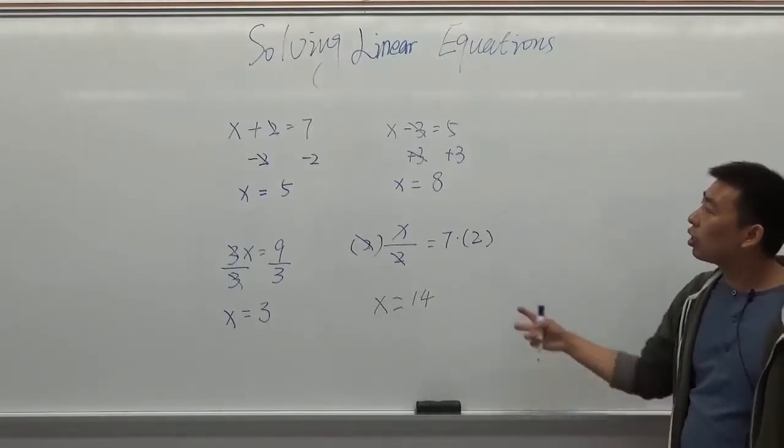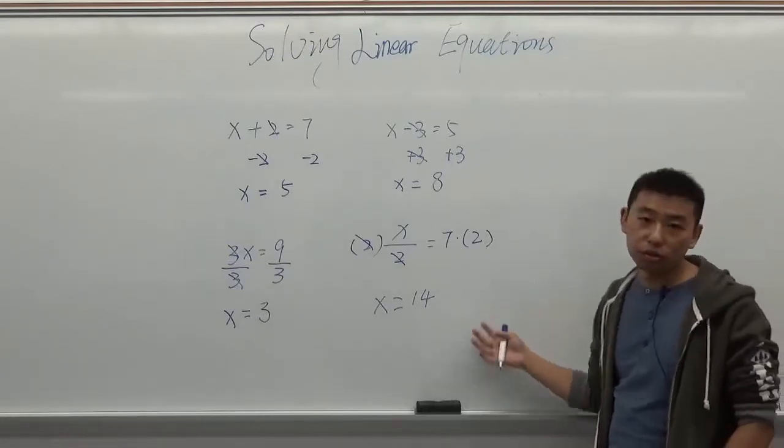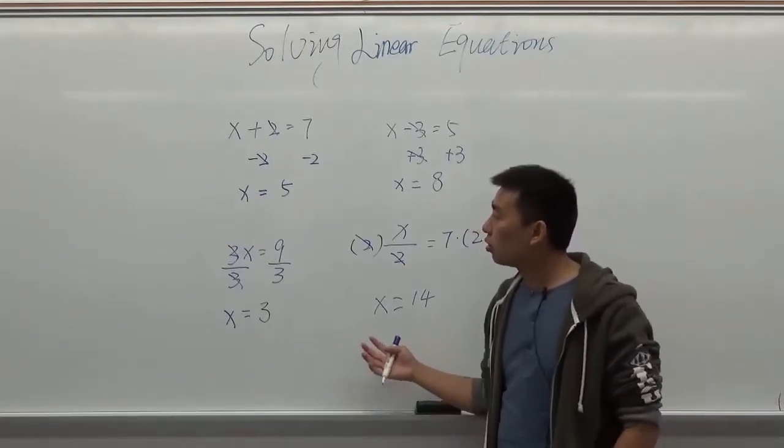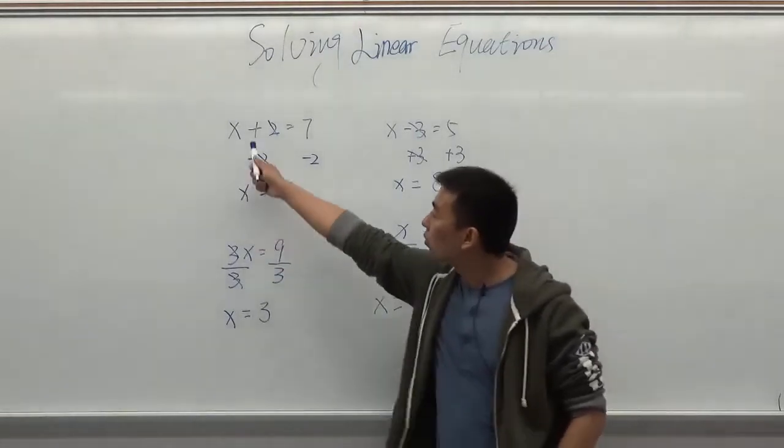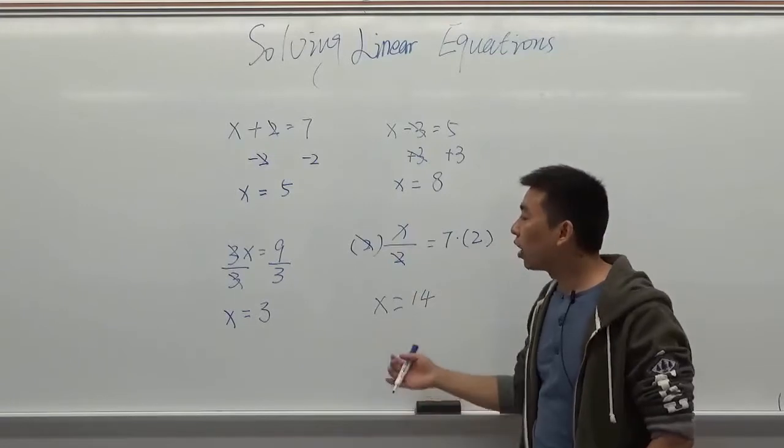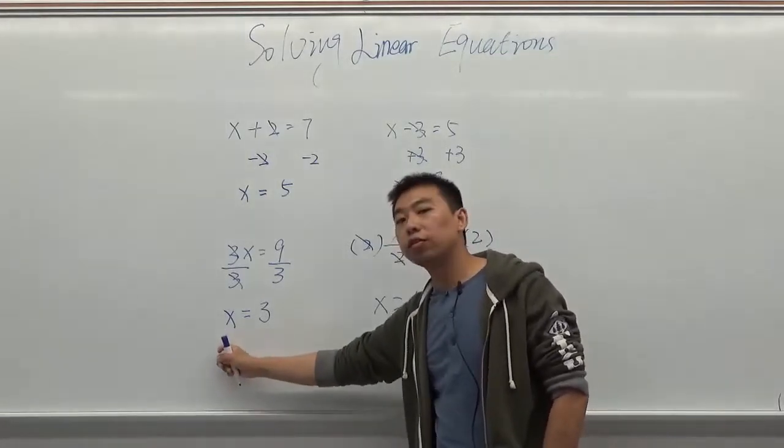So that's one step linear equation. All you need to do is just one step to solve it. The key you need to know is that when you see there's an operation here, you need to do the opposite operation, then you can solve it for x.